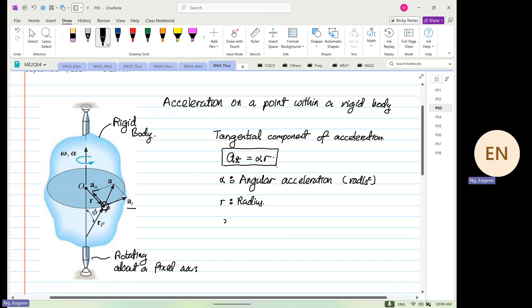Radians per second squared, and then r is equal to the radius or correspond to the radius. Now we also know that a_t is equal to zero during what? Constant velocity.